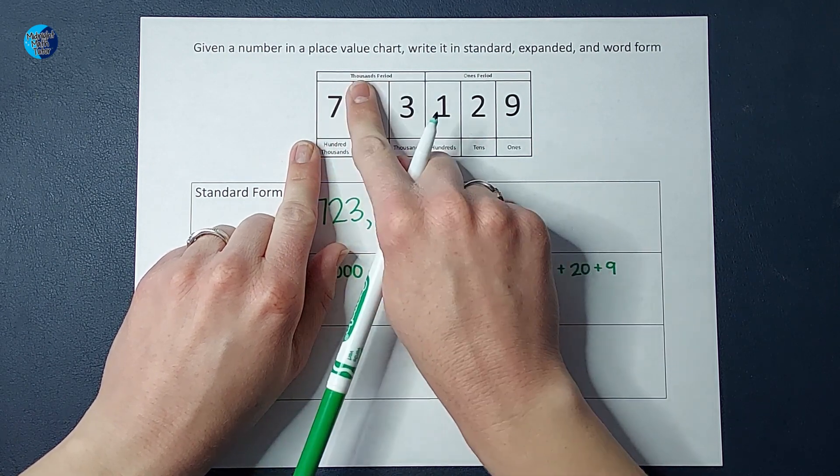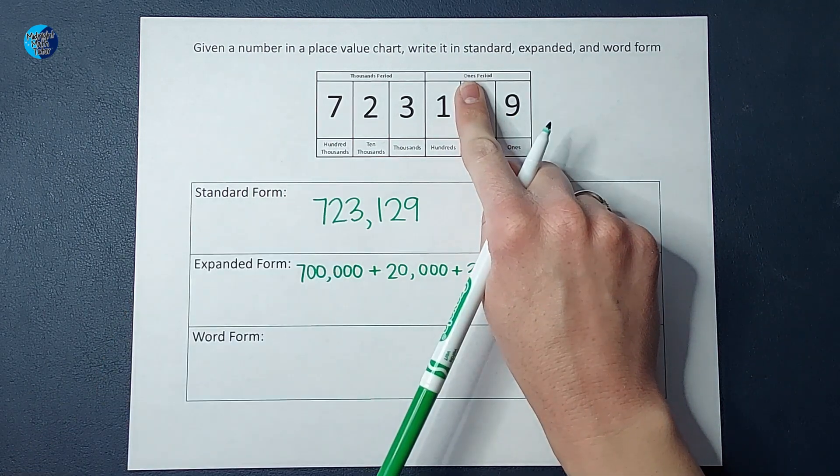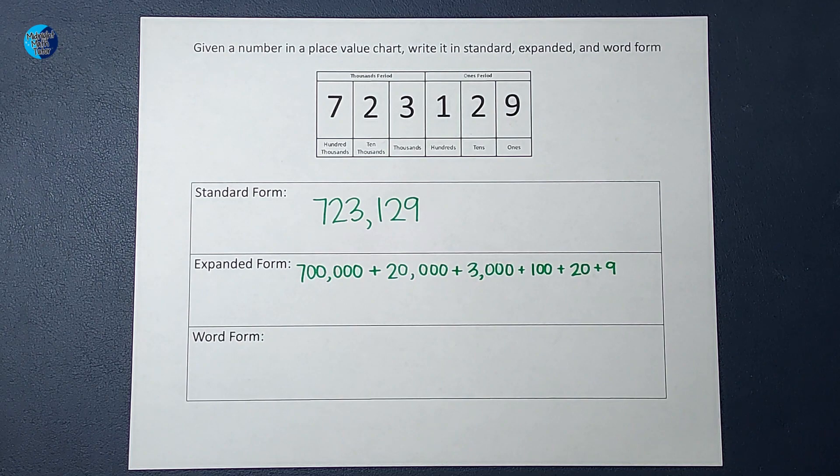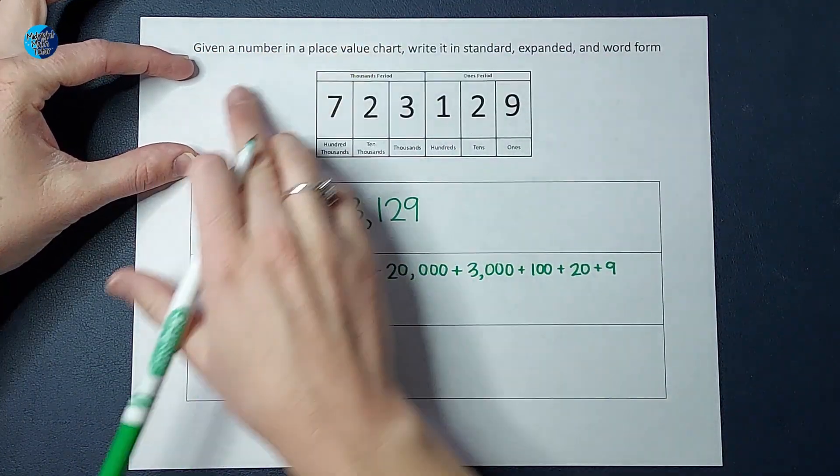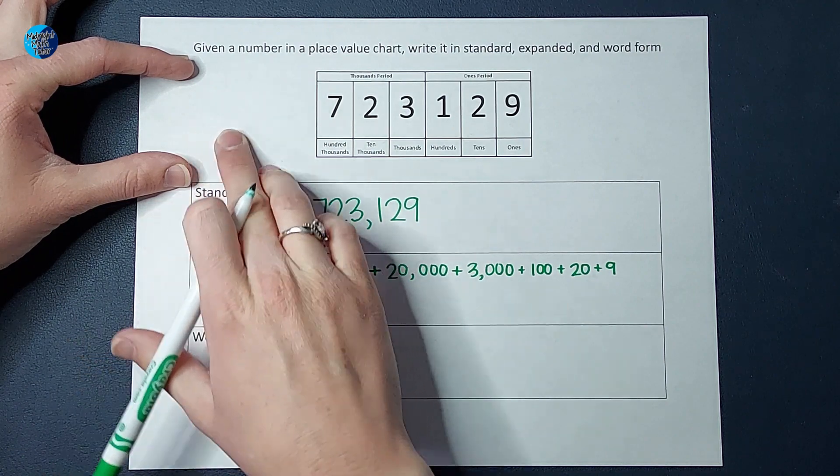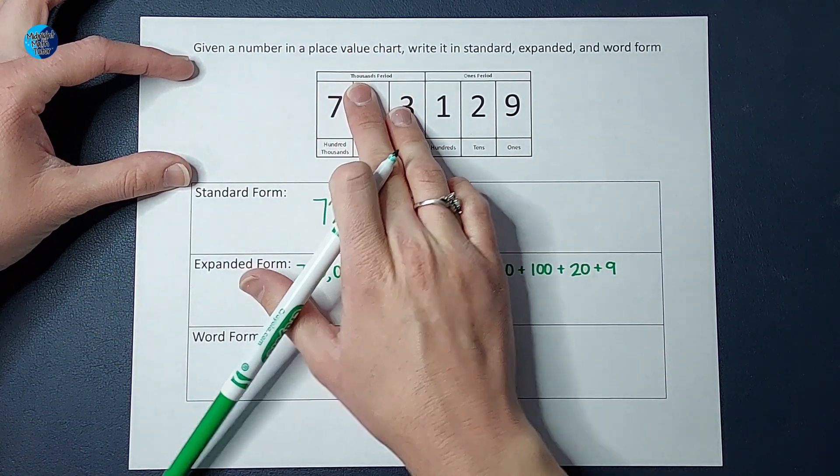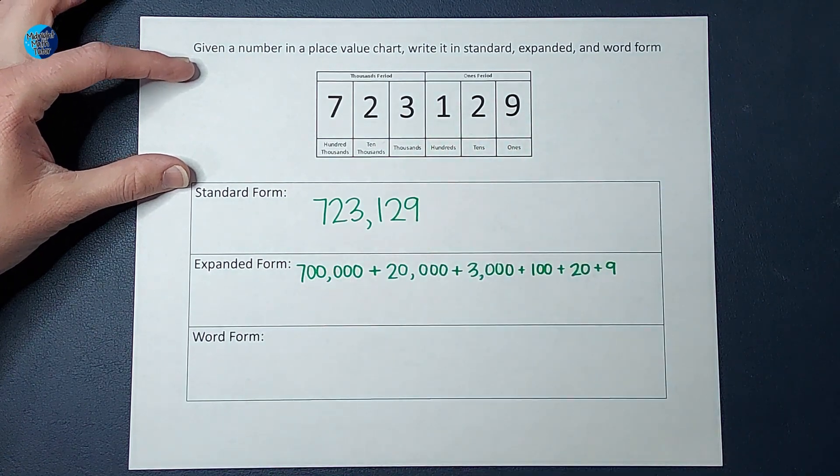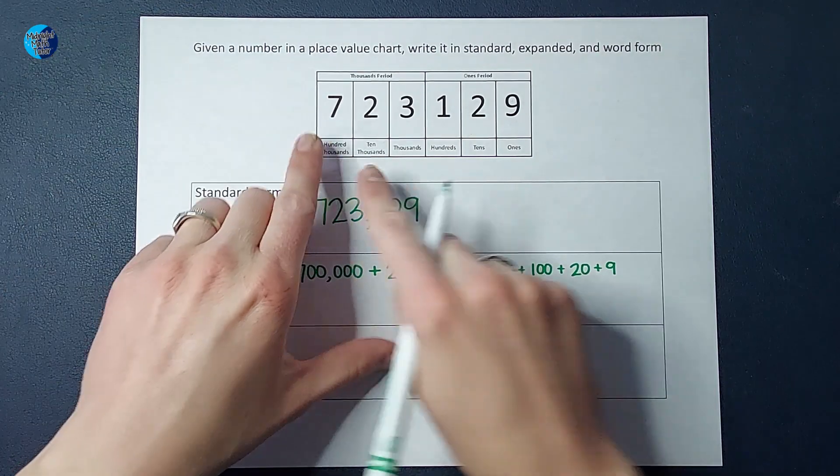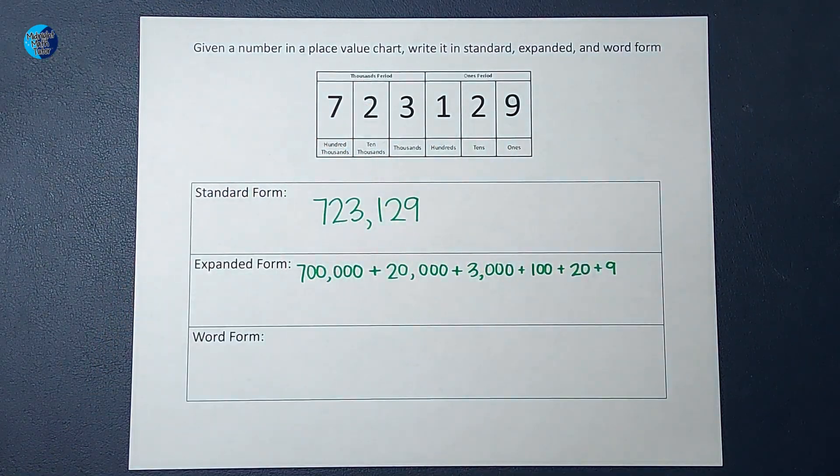723 thousand, 129. Now, we don't say 'one,' but that is the ones period. If this were to be bigger, it would be the millions period. So, it would be like 254 million, 723 thousand, 129. Your student's probably not to that point yet, so we're just sticking with the thousands. So, we are going to write this as seven hundred twenty-three thousand, one hundred twenty-nine.